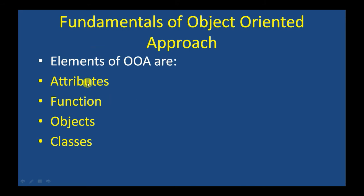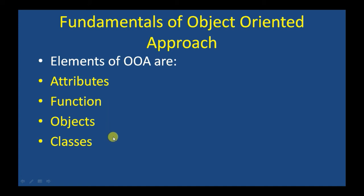Attributes and behavior are bound in a single unit and used as an object. The term object-oriented means that we organize our software as a combination or grouping of different types of objects that incorporate both data structure as well as behavior. We have attributes, functions, objects, and classes as the fundamentals of OOP.